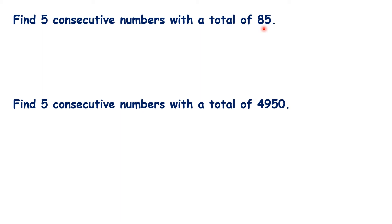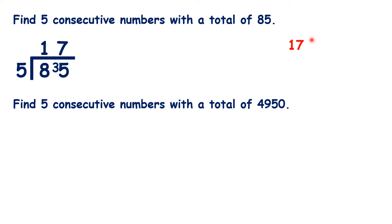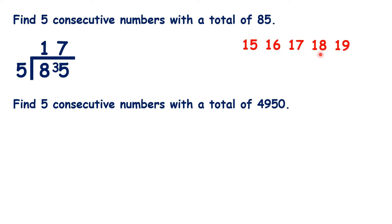For this first question, we want to find five consecutive numbers with a total of 85. So we divide 85 by 5, which gives us 17. So 17 is our middle number. One less gives us 16, one more gives us 18. Two less gives us 15, and two more gives us 19. So 15 plus 16 plus 17 plus 18 plus 19 gives a total of 85.